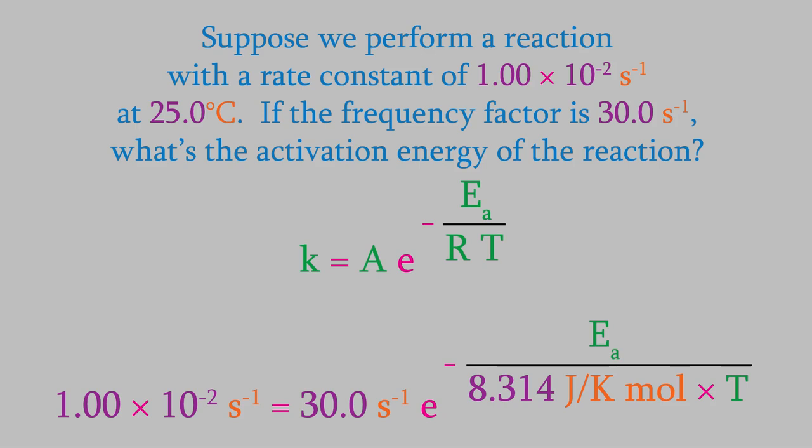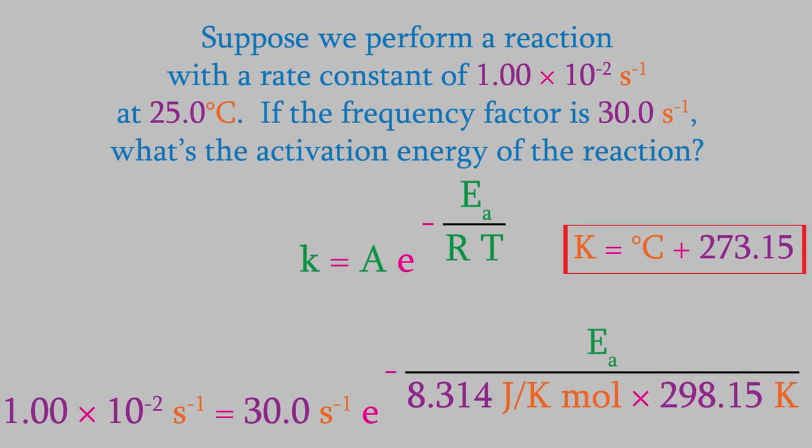T is the temperature. As you just saw, our unit for R has kelvins in it, so that's the unit we should use for the temperature. Remember, to convert Celsius to Kelvin, we add 273.15. So, 25 degrees C is 298.15 Kelvin. Now that we've done that, we're ready to solve the problem.